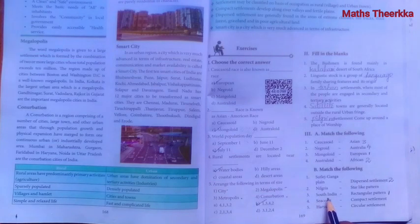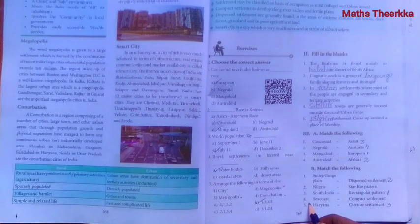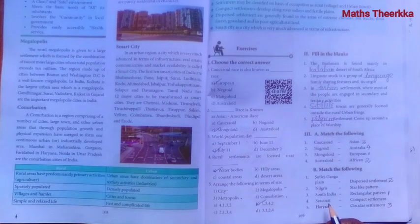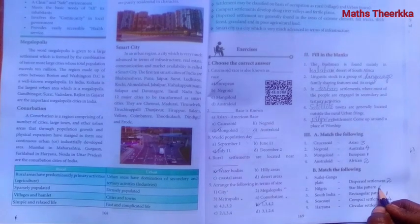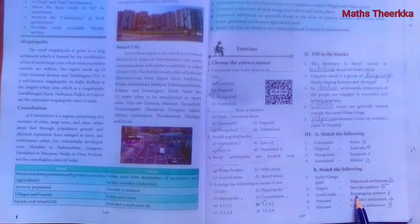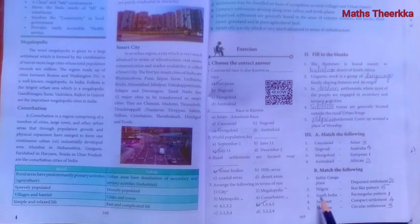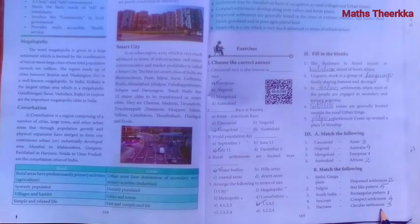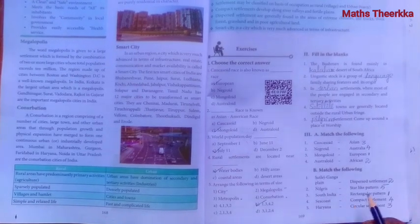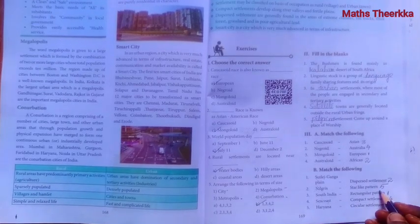South India — circular settlement. Seacoast — compact settlement. Haryana — star-like pattern.